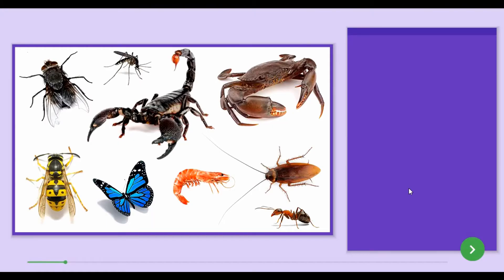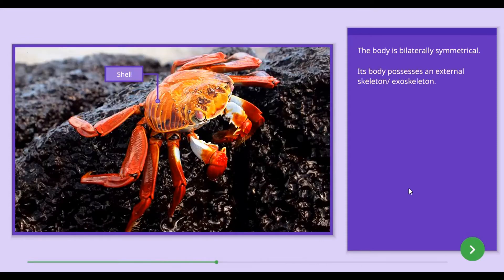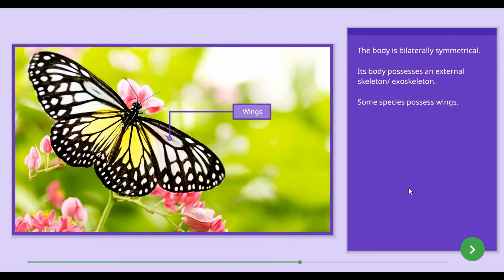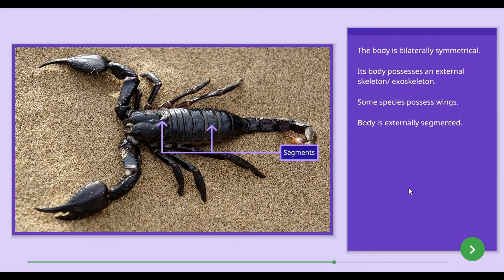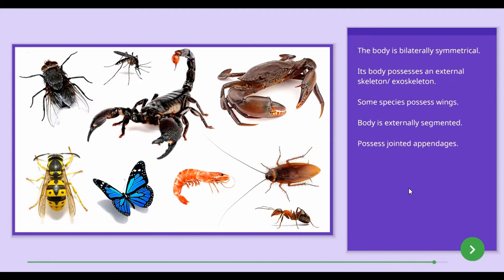The common features of animals in the Arthropoda group are as follows. The body of Arthropoda animals is bilaterally symmetrical. Their body possesses an external skeleton. Some species possess wings. The body of Arthropoda is externally segmented. They also possess jointed appendages.